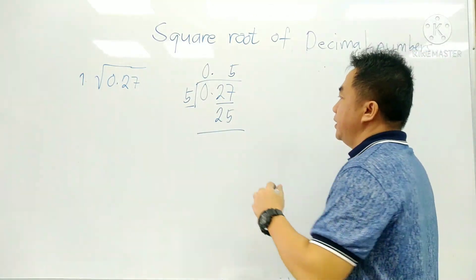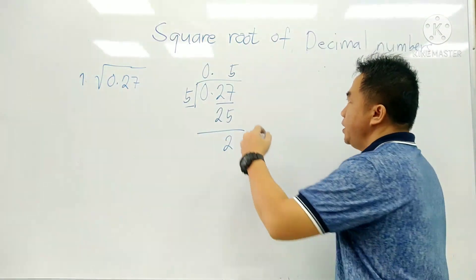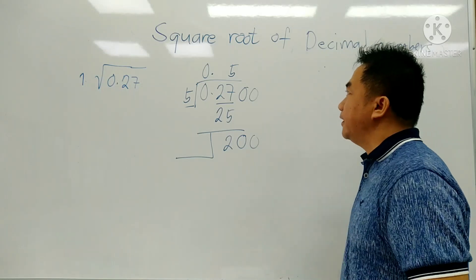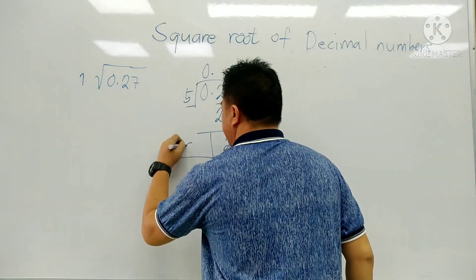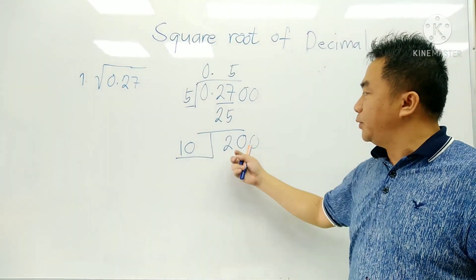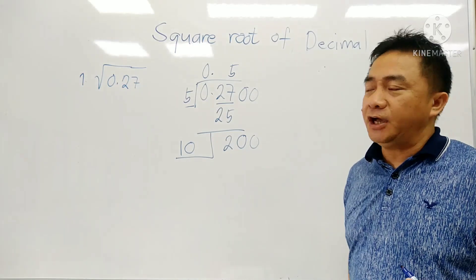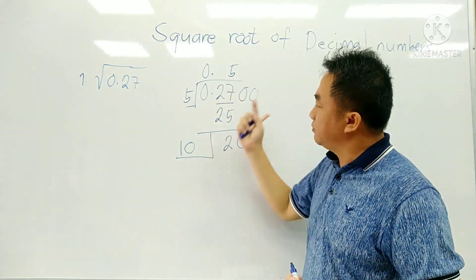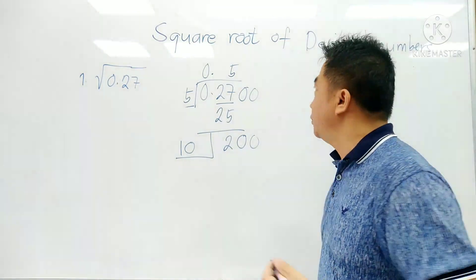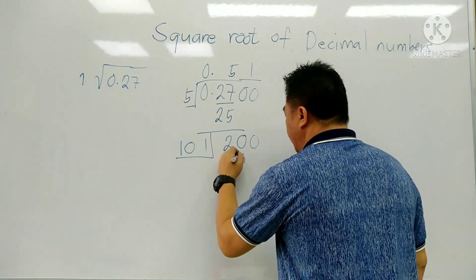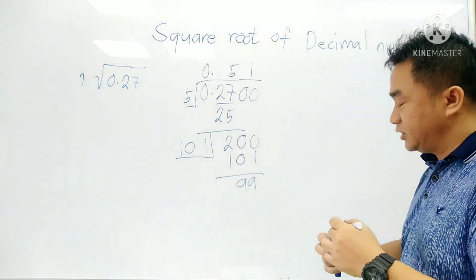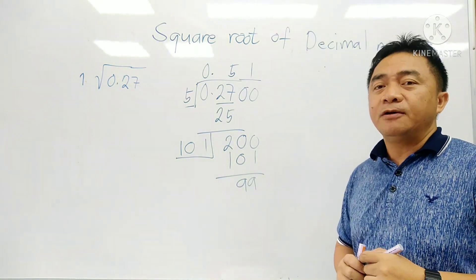We subtract this, we have 2. And again we add 2 zeros — it becomes 200. We add 5 and 5, that would be 10. And again, the same method — we're going to think of any number here that when we multiply, it will not be more than 200 as our dividend. We say 101 or 102. When you say 102 times 2, it's more than 200. So we say 101 times 1 — that is 101. Minus 200, we have 99. So the square root of 0.27 is 0.51.